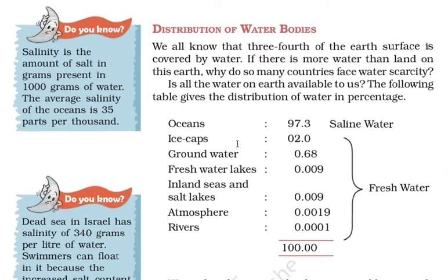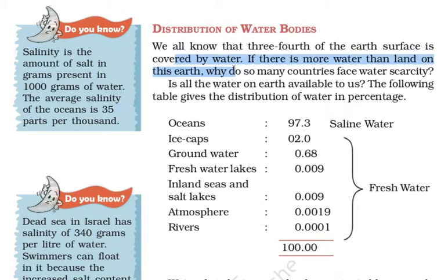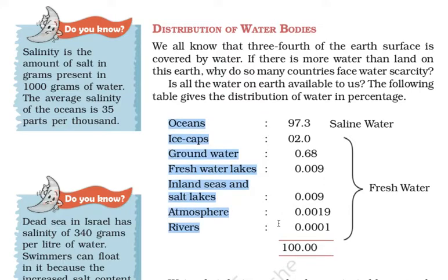We all know that three-fourths of the earth's surface is covered by water. If there is so much water on earth, why do so many countries face water scarcity? Is all the water on the earth available to us? The following table gives the distribution of water in percentage.